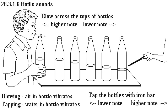Here's an experiment with different bottles of water — one where they're blowing and one where they're tapping the bottle with an iron rod. When blowing across the top of the bottle, the more water gives the higher note and the less water gives the lower note. When tapping the bottle with an iron rod, the more water gives the lower note and the less water gives the higher note. So there's a difference between tapping the bottle and blowing on each bottle.